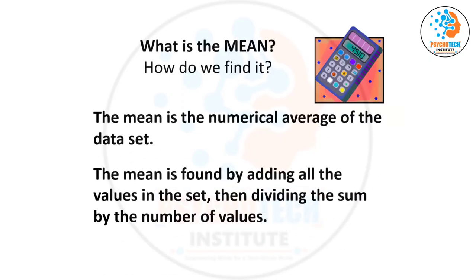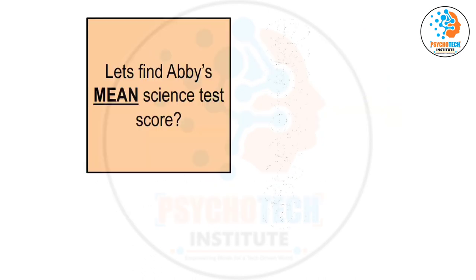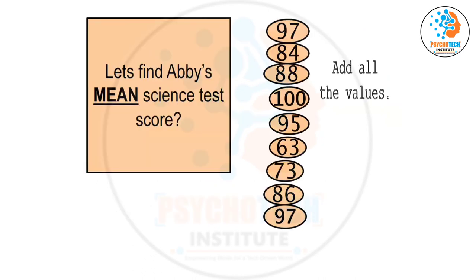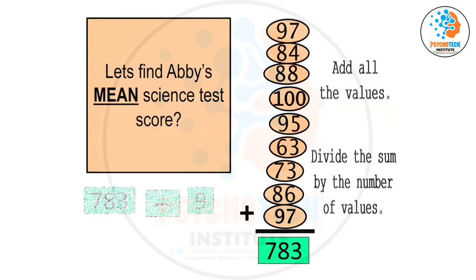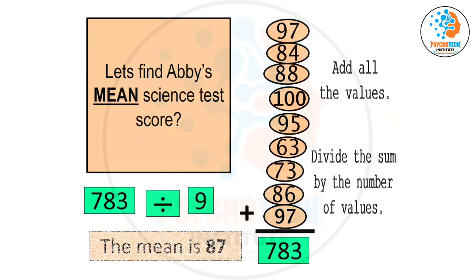Mean is very simple — just add up the numbers and divide by how many numbers there are. You already know that. Now, if it is a quantitative variable and we know how to calculate the mean...